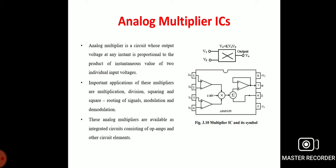Moving to the AD633 multiplier — it is a four-quadrant analog multiplier with high input impedance, making the loading effect on a single source negligible. It can operate with supply voltages ranging from plus or minus 18 volts, and the IC does not require external components.